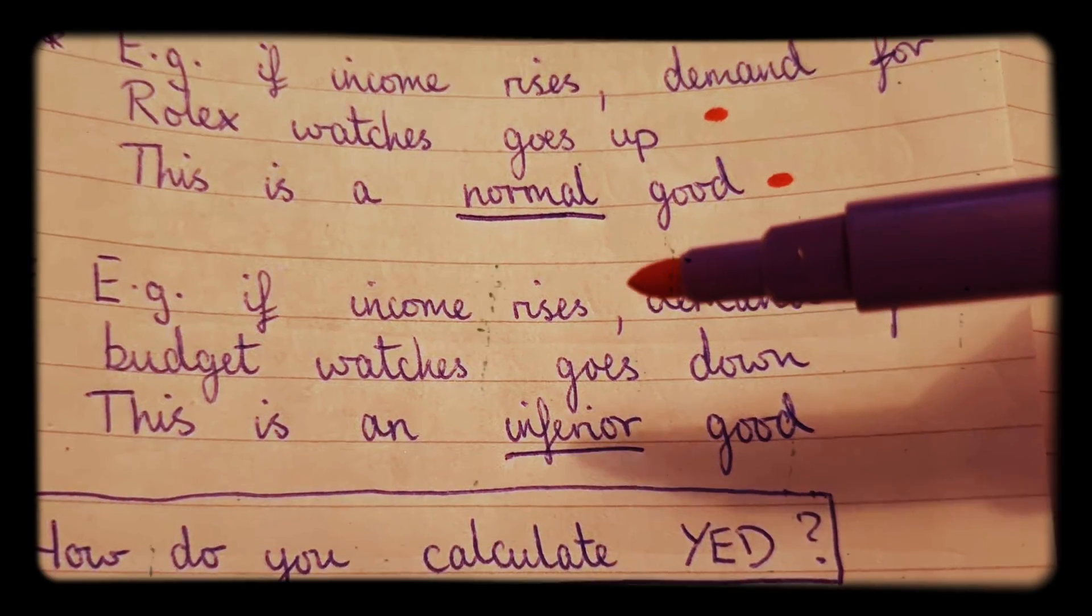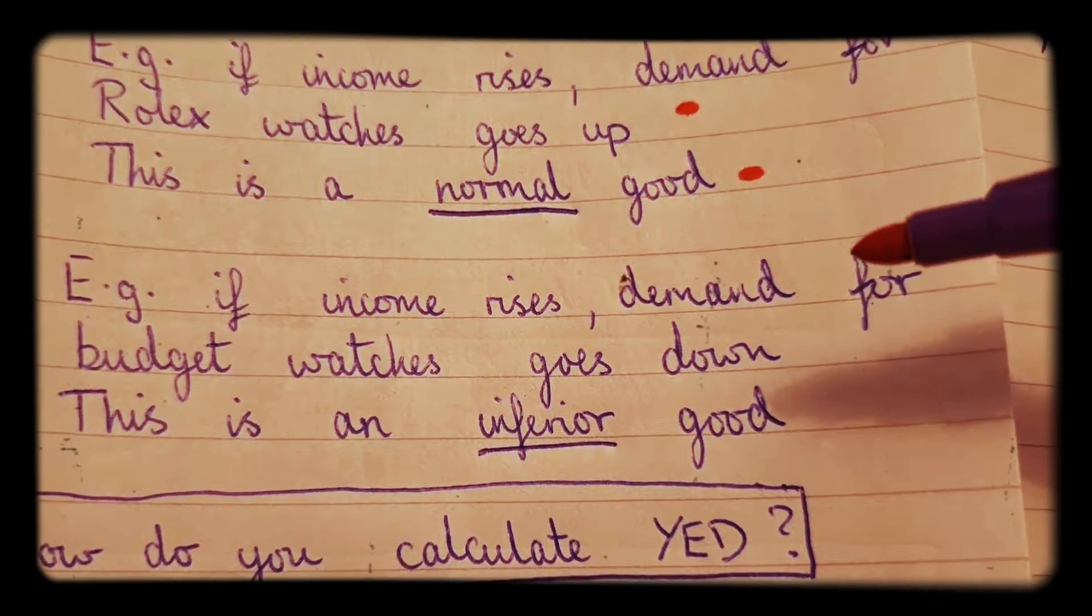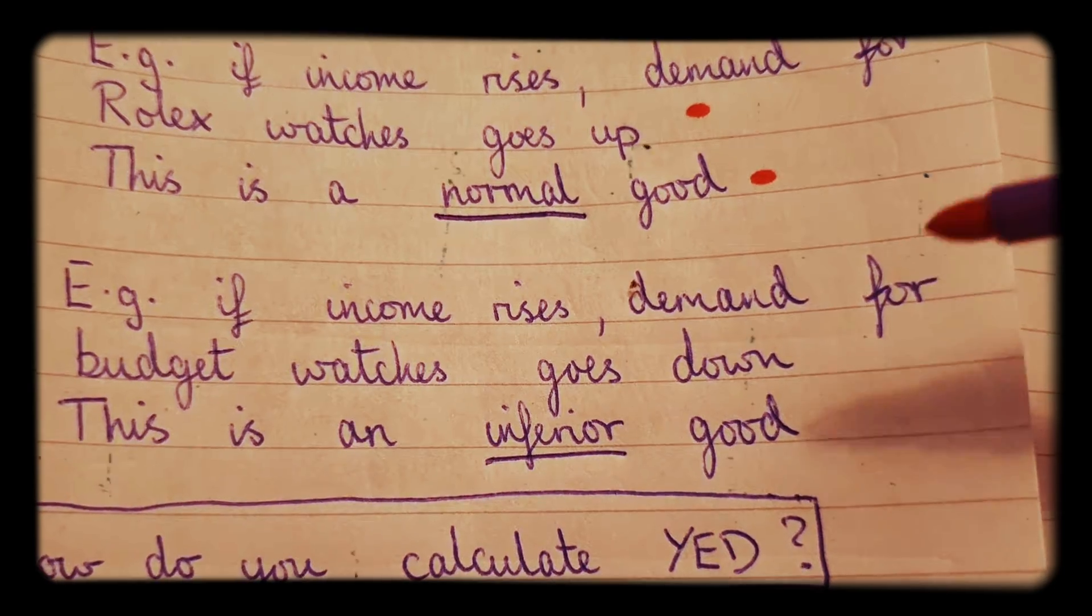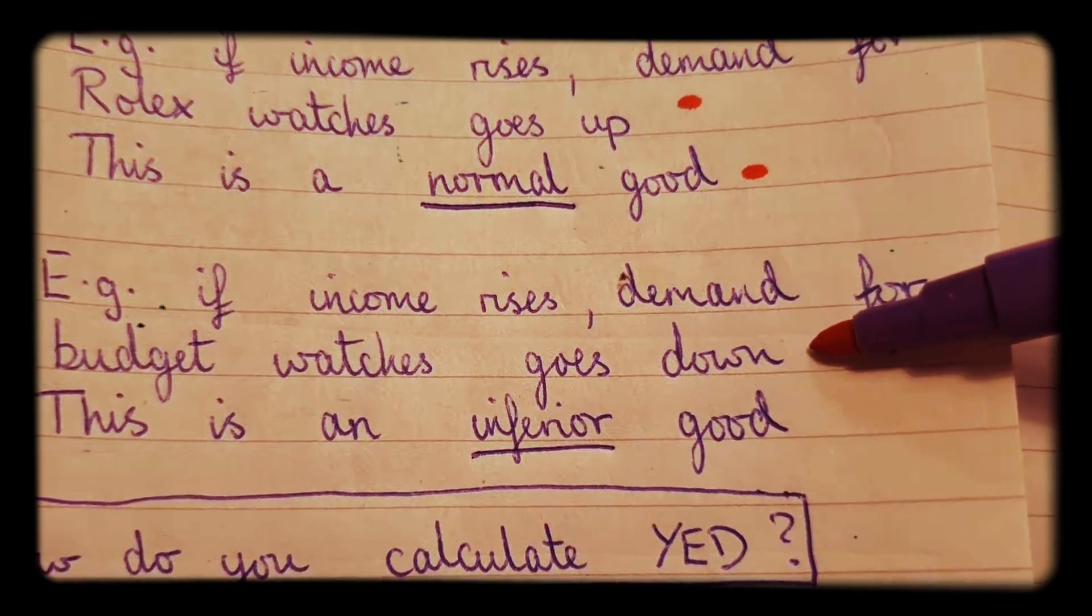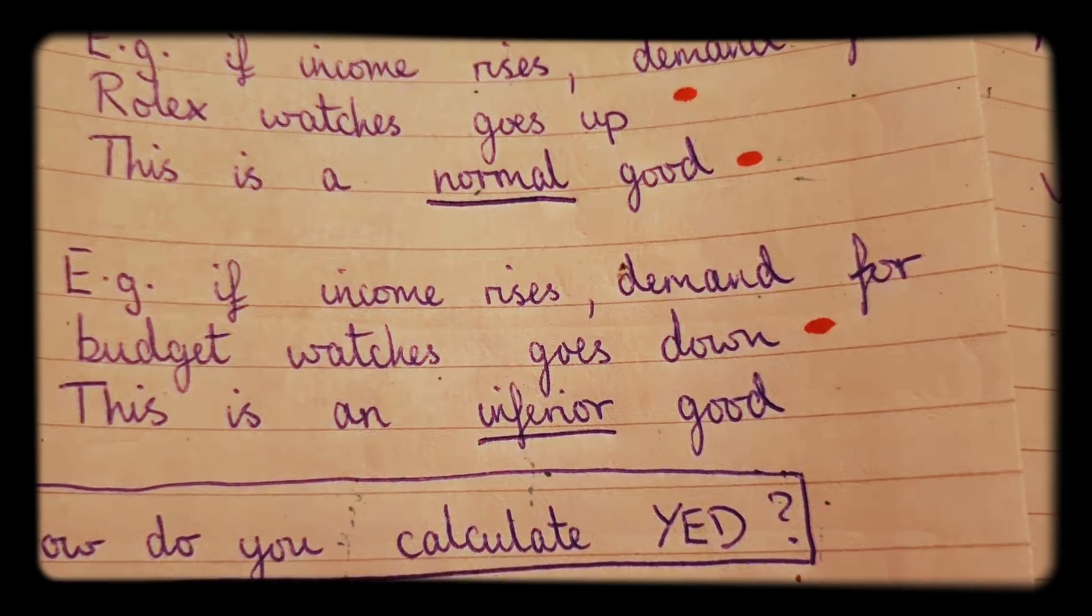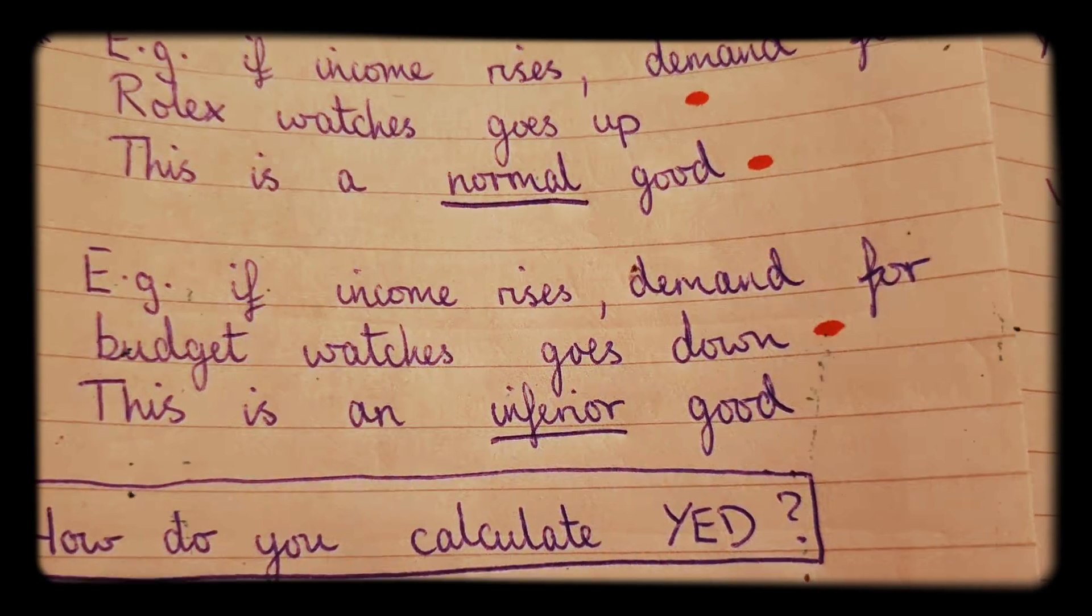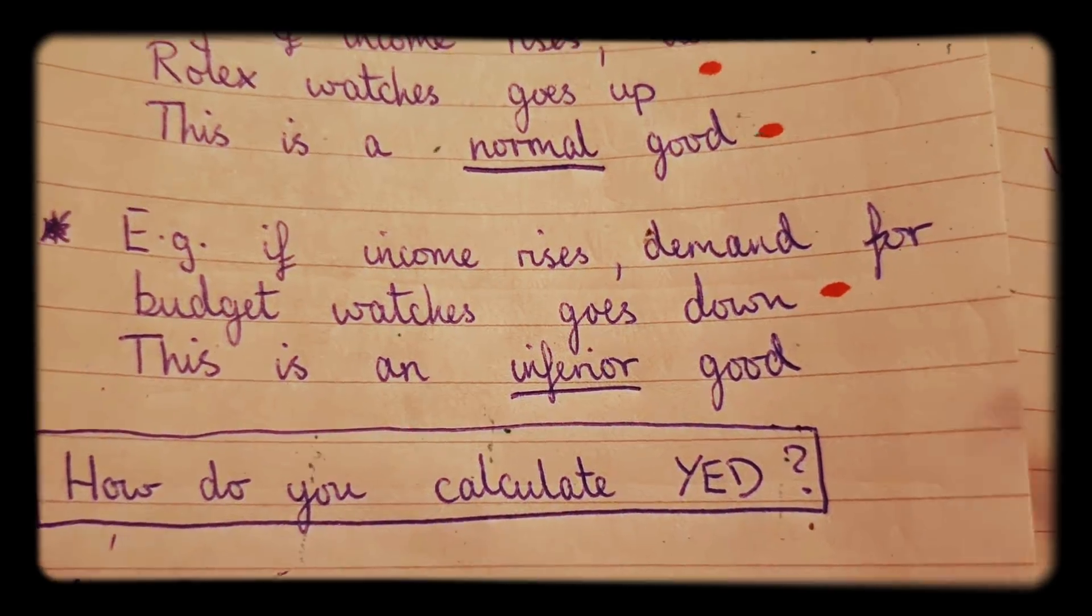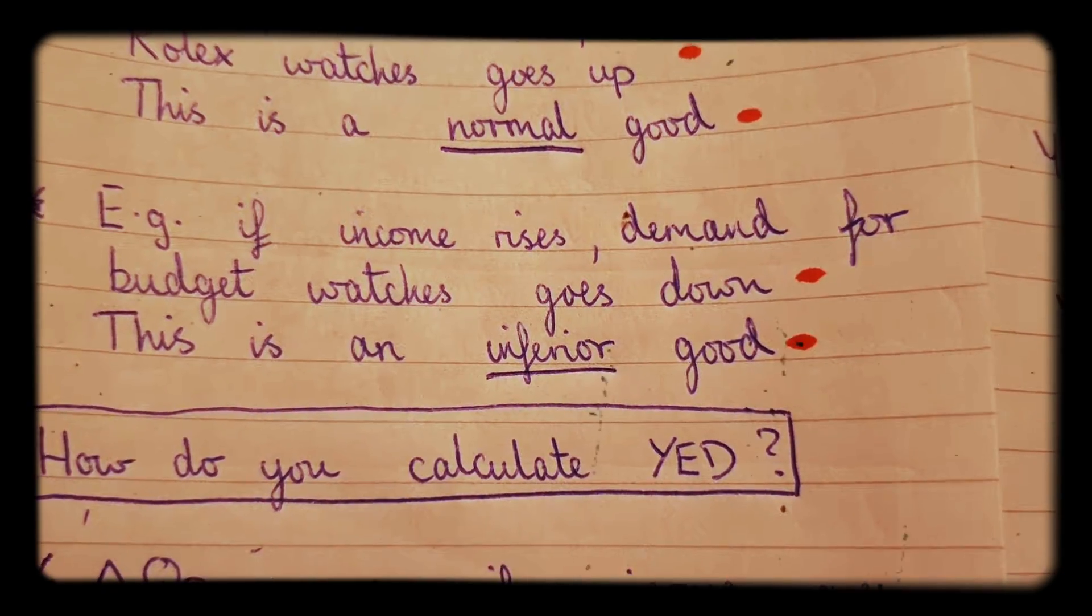Now in the example of if income rises and then demand for budget watches goes down as you would expect. So in the case of a budget watch, let's say for example a Casio or something like that, this is referred to as an inferior good.